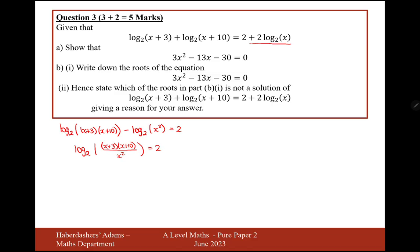Let's now move the two onto the other side. So it becomes 2 to the power of 2 which is 4. So x plus 3 x plus 10 over x squared equals 4. That's 2 to the power of 2.